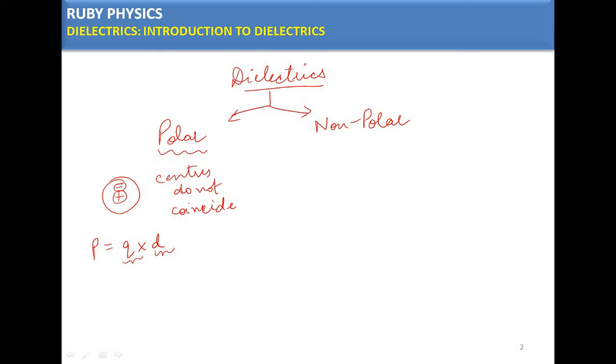Some molecules have centers that do not coincide, and they are said to be polar dielectrics.